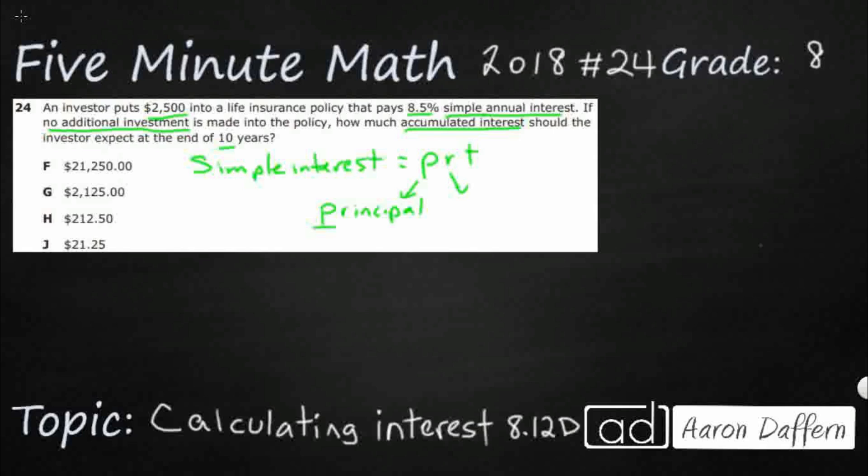This R right here is going to be the interest rate. Sometimes we just abbreviate it with the word rate. That's where that R comes from. In this case, it's 8.5%.